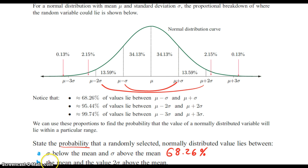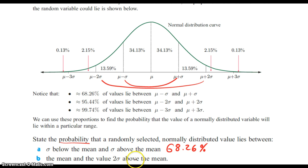If we want to figure out the probability between the mean and the value two sigma above the mean, see if you can do this one on your own. Go ahead and pause. If you saw this, you notice that you have this and this, so it's going to be 47.72 percent.